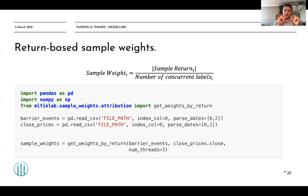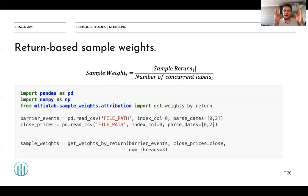Why do we divide our sample return by the number of concurrent labels? We have previously discussed the concept of concurrency — that is the reason why our data is not IID, because we have several concurrent labels in our dataset as a result of our labeling procedures. We want to give higher weights to those clean labels which do not overlap with others, because they are much closer to IID and the algorithm can extract more information from them.